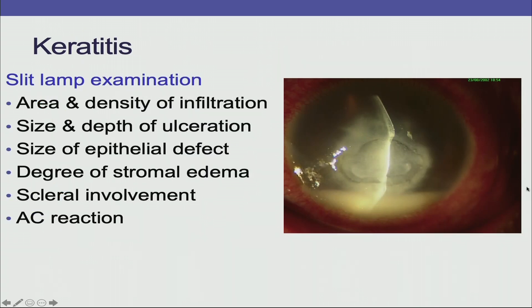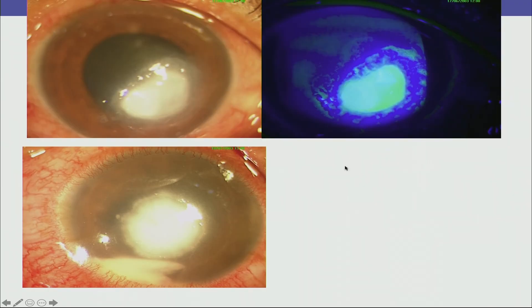Whenever a case of microbial keratitis comes, however small or large it may be, it is important to do a good slit lamp evaluation and fluorescein staining. This is mainly to know the area and density of infiltration, the size and depth of ulceration, the size of the epithelial defect, the degree of stromal edema, scleral involvement, and anterior chamber reaction.